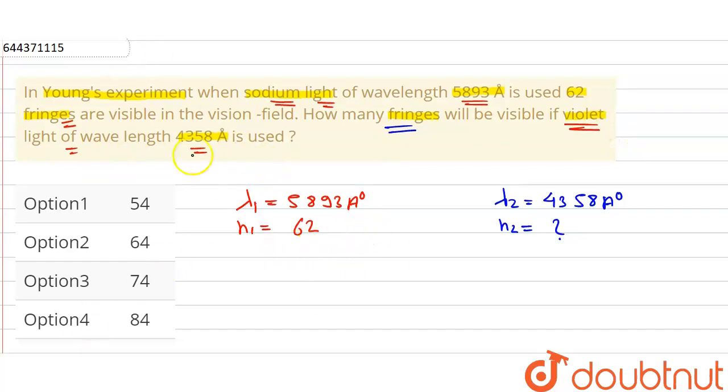Now we can write the equation of wavelength lambda and fringe N as N1 times lambda 1 equals N2 times lambda 2.